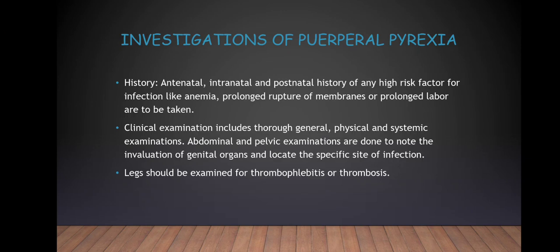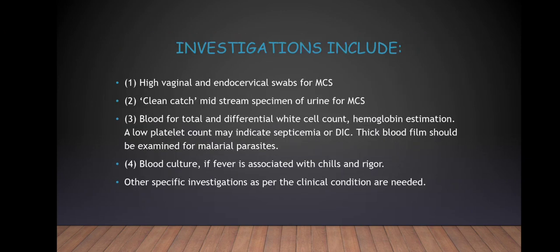In history, you look at the antenatal, intranatal, and postnatal history for any high-risk factors of infection such as anemia, prolonged rupture of membranes, or prolonged labour. Clinical examination includes thorough general, physical, and systemic examinations. Abdominal and pelvic examinations are done to note the status of genital organs and locate the specific site of infection. The legs should be examined for thrombophlebitis or thrombosis. Investigations include high vaginal and endocervical swab for microscopy, culture and sensitivity; a clean-catch midstream specimen of urine for microscopy, culture and sensitivity; and blood for total and differential white cell count and haemoglobin estimation.